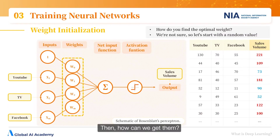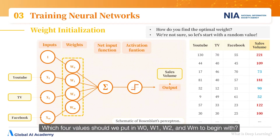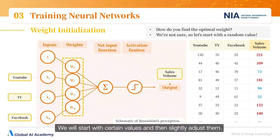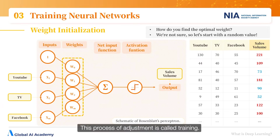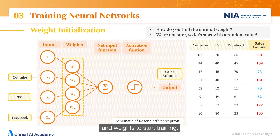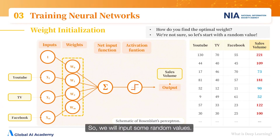How can we get those weights? Which values should we put in w0, w1, w2, through wm? To begin with, we start with certain values and then slightly adjust them. This process of adjustment is called training, but we need initial values and weights to start training.